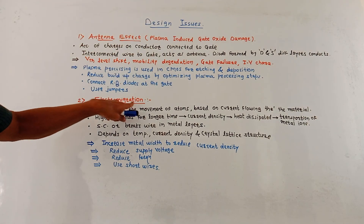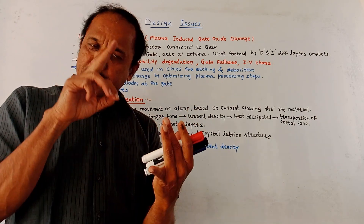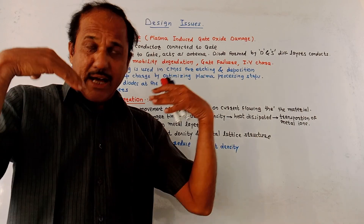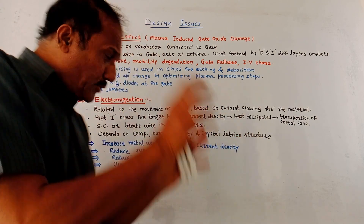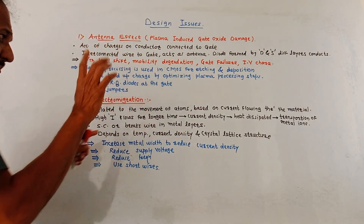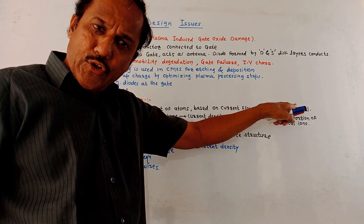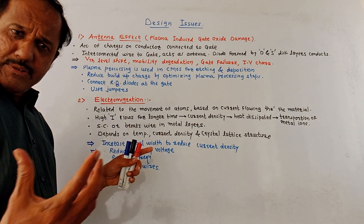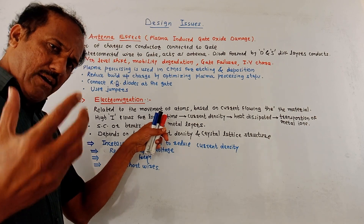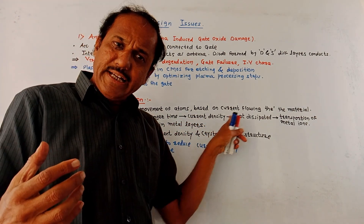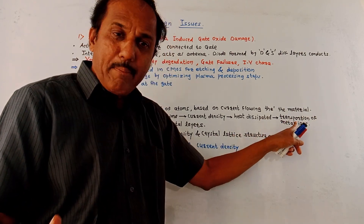The second effect is electromigration. This effect is related to the flow of current — that is, related to the current density — and because of the large current density, heat is getting developed and dissipated. It is related to the movement of atoms based on the current flowing through the material. When there is a high flow of current density for a longer time period, the heat dissipated causes the transportation of metal ions.